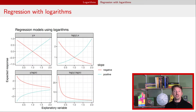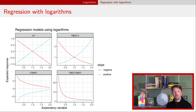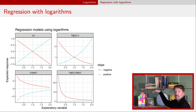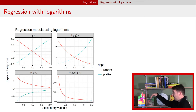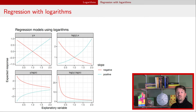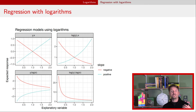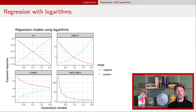One question is why we might use logarithms. One answer is that it allows us more functional relationships between our explanatory variable and our response variable. The top left facet shows simple linear regression — only two possibilities: a straight line going up or down. The other facets provide different functional relationships with curvature that might better represent your data. That's one of the reasons we might want to use logarithms.